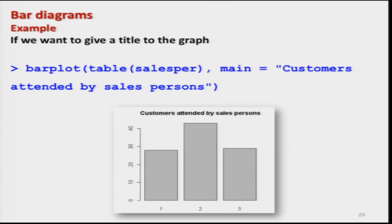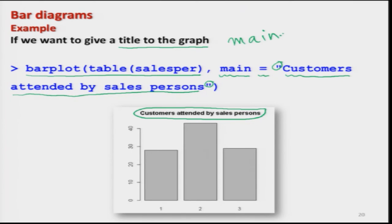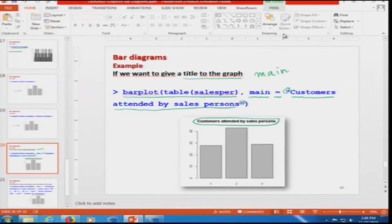Now I would like to add some features to this plot. Suppose I want to give a title. I use the command main equal to, and inside double quotes write the title I want — for example, 'Customers attended by sales person'. When you execute it, you get the same graph but now with that title added. The moral is: to add a title on the graph, use the command main.